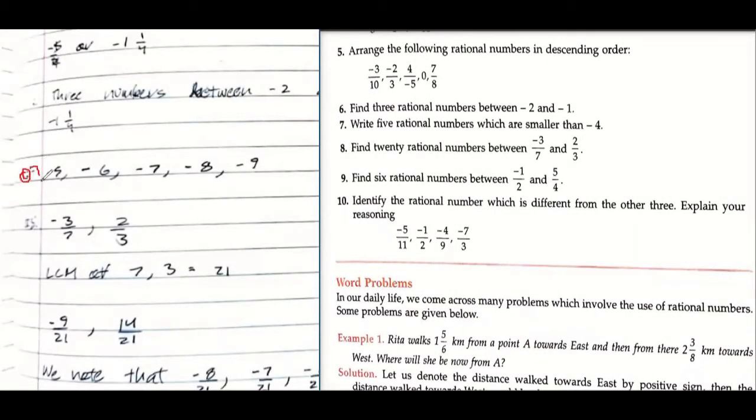In question number 7, we need to find 5 rational numbers which are smaller than minus 4. If we draw a number line, these are on the left side of minus 4. You have correctly mentioned minus 5, minus 6, minus 7, minus 8, and minus 9 are the 5 rational numbers smaller than minus 4.